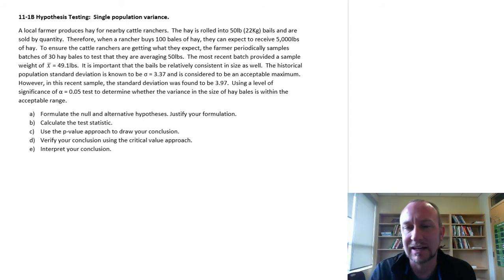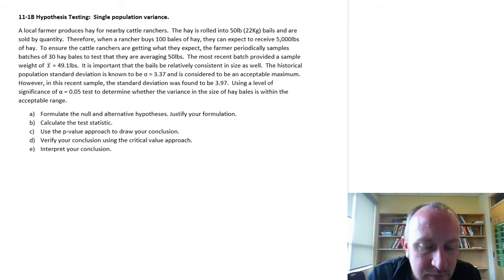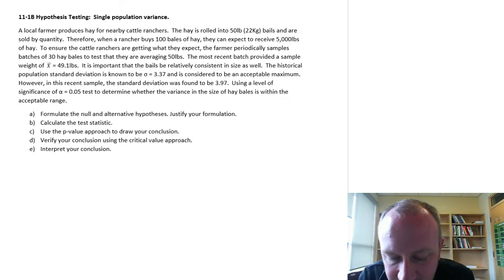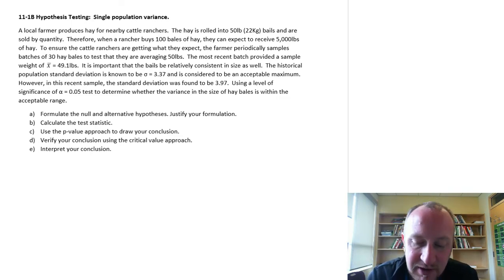Let's get into it. So here we have that local farmer who's producing hay from nearby cattle ranchers. The hay is rolled into 50 pound bales and are sold by quantity. Therefore, when a rancher buys a hundred bales of hay, they can expect to receive 5,000 pounds.